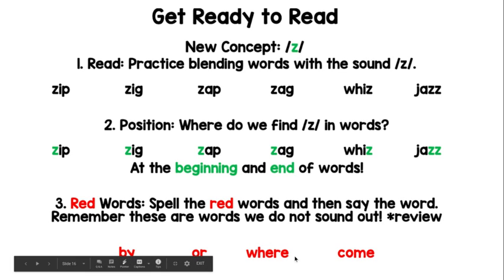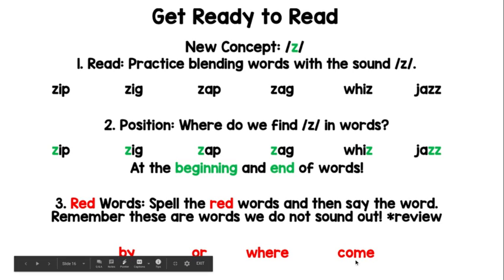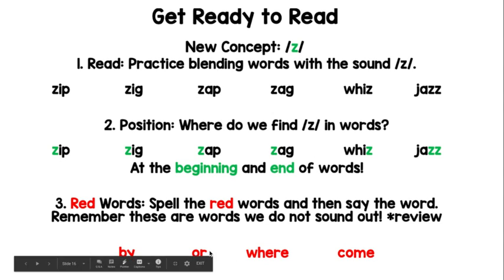The next word is a word for this week, which is 'where' — W-H-E-R-E spells where. This is also a word of the week. 'Come' — C-O-M-E spells come. So I want you to go back through, say the letters, spell it, and then say the word.